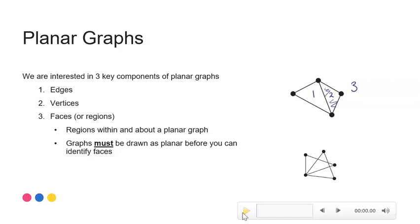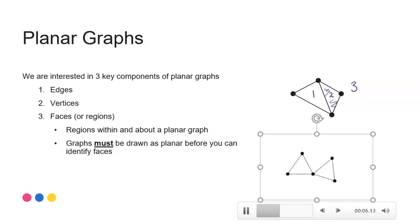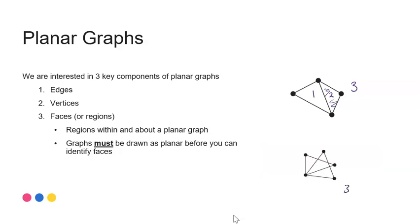The second example here, at the moment that graph is not planar. So we need to redraw it before we can consider the number of edges and faces. So again, here we're colouring in our regions and we can see this particular example once again has three faces or three regions, but we can't identify that when it's not drawn in a planar form. So very important, the first step is always to redraw your graph as planar.